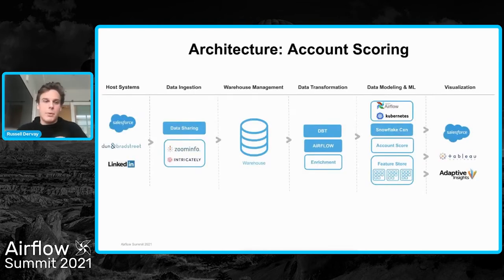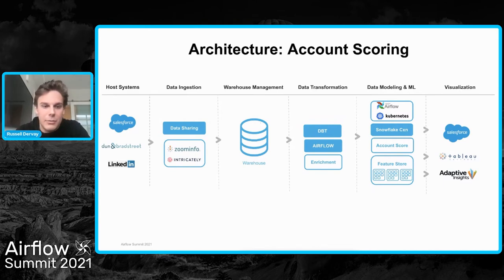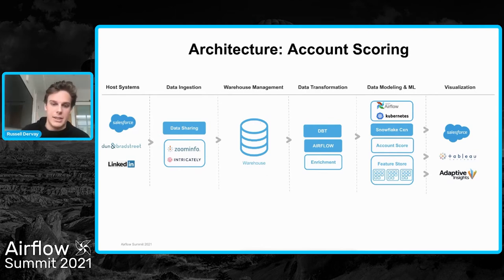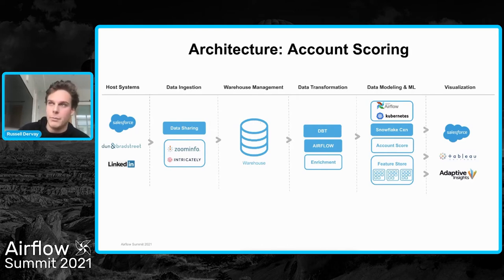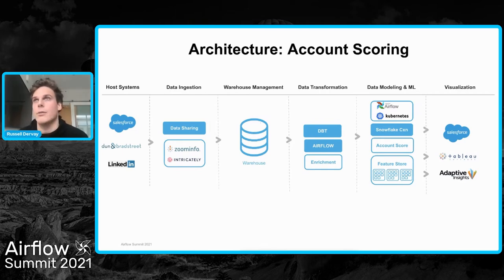The example I'm going to walk through today is our account scoring model. We've got a bunch of different host systems for enrichment. We're ingesting it via various means — a lot of it is done on Airflow — into our warehouse. We use DBT and Airflow for transformation, and we run our machine learning models on Airflow as well to compute a score. But previously, we had no way of getting that into an end user's hand — in the Adaptive case, into planning's hand for future fiscal quarters, or into Salesforce so reps can see how we think about an account. They could only go into Tableau and see curated reports, so they couldn't really work with the number themselves.